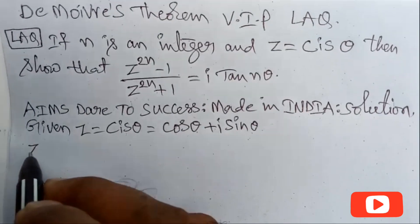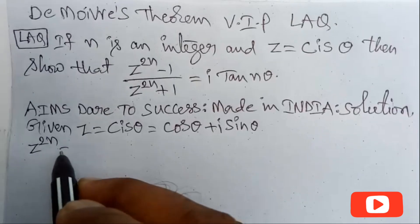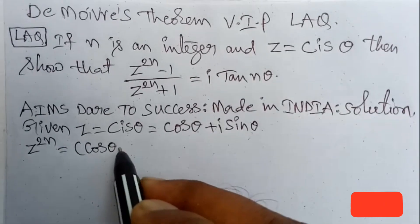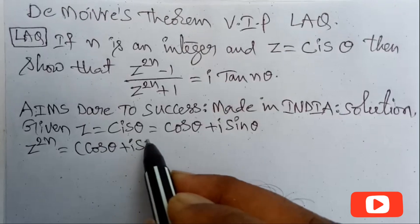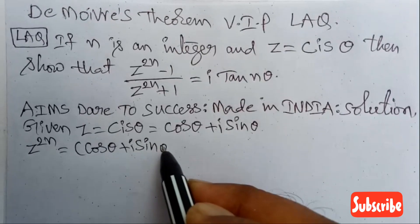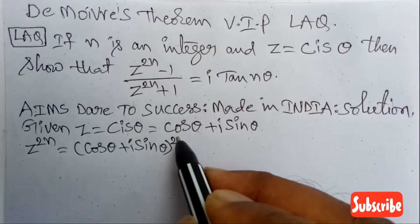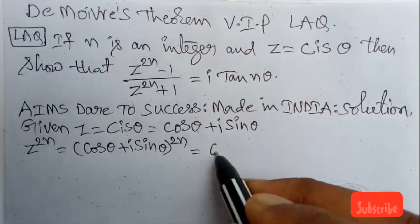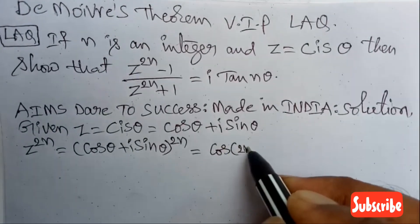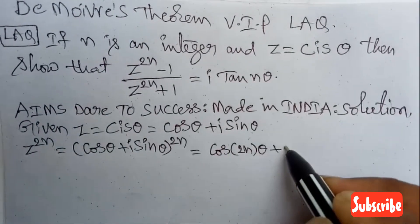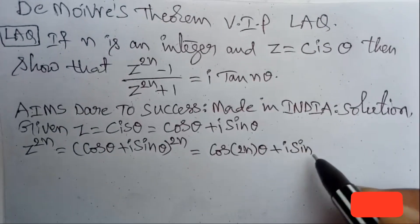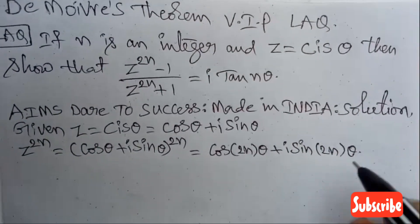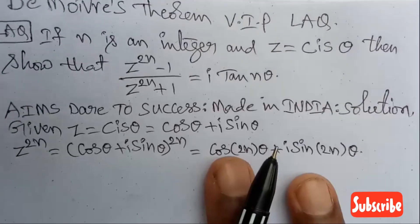We want to find z power 2n first. That is: cos theta plus i sine theta, all raised to power 2n. The power 2n comes inside multiplying with the angle, giving cos 2n theta plus i sine 2n theta. This is from the concept of De Moivre's Theorem.